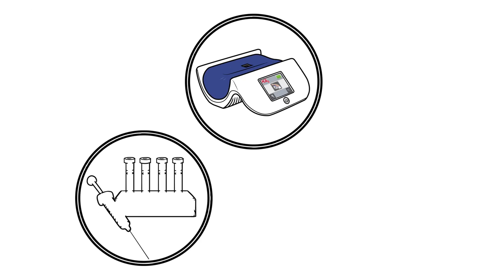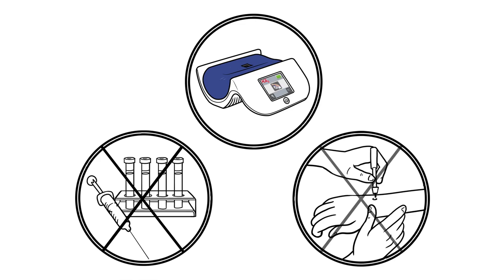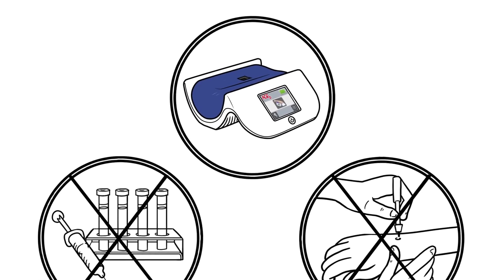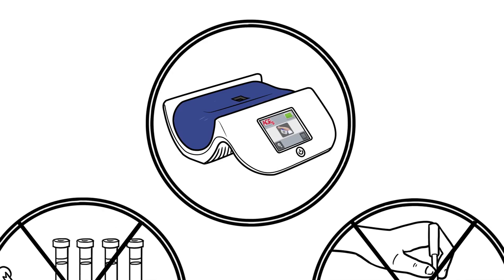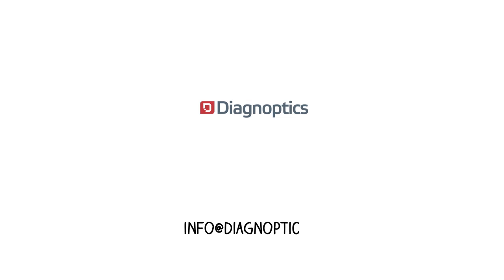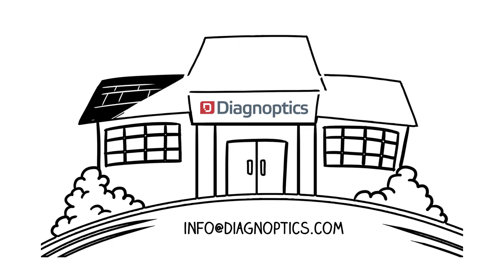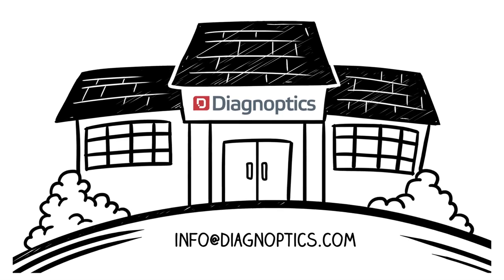Established in 2003, Diagnoptics is the pioneer of cutting-edge devices that can non-invasively diagnose and assess the risk of diabetes and its complications. It's critical to assess the individual cardiovascular risk of your diabetes patients. To learn more about how you can dramatically improve cardiovascular risk prediction with the AGE reader, contact us today.